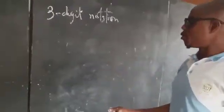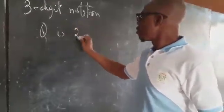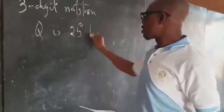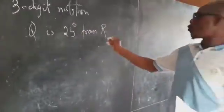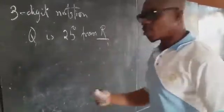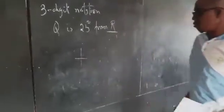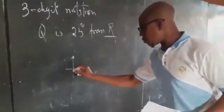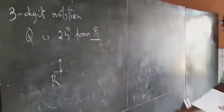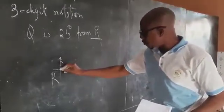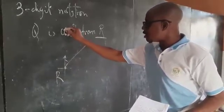For example, Q is 25 degrees from R. But what we have to locate first is R. This is our R. And Q is 25. Meaning that if it is 25, that's only two digits, so we start with zero.